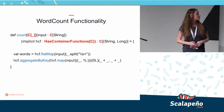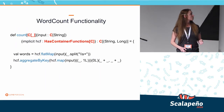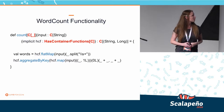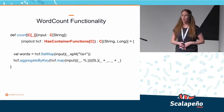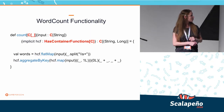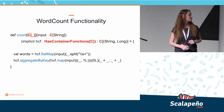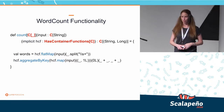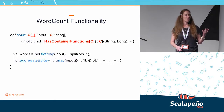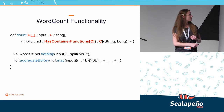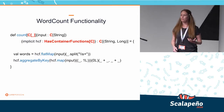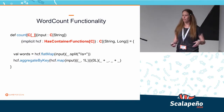So let's look more deeply into this. Here is an implementation of word count, and we can see that there are a few functions we need to support: flat map, aggregate by key, and map. We support them using this type class called HasContainerFunctions. So if we manage to support this functionality — flat map, aggregate by key, and map — that means we can run this function with any collection that supports those three functions.